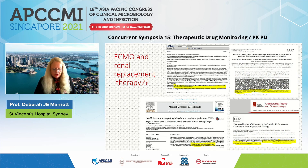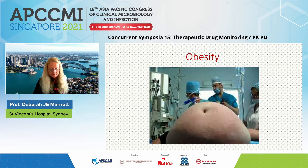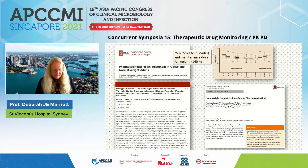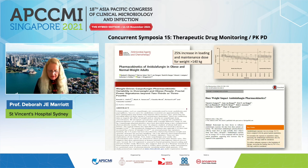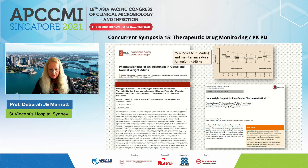Regarding ECMO and renal replacement therapy, the jury is still out: a paediatric paper showed underdosing while several others showed reduced but probably adequate dosing. On obesity: as our population grows in size, several modelling papers have shown that for all echinocandins, once weight exceeds 66 kilograms, dosing should be weight-based. Studies of anidulafungin pharmacokinetics showed that as weight increases, both loading and maintenance doses should increase by approximately 15%, while another paper showed a 25% increase in loading and maintenance dose was needed once weight exceeded 140 kilograms — significant evidence that obesity warrants higher echinocandin doses.